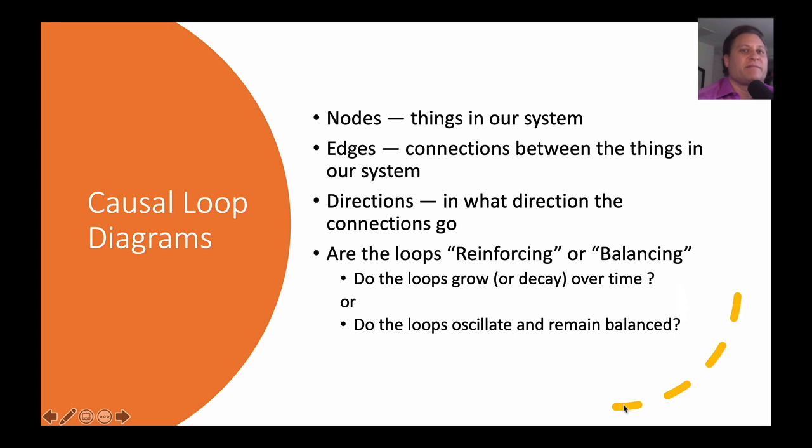So some definitions behind causal loop diagrams. We have nodes, which are basically the things within our system, the elements. So in the case of the molecules, it was the atoms that were our nodes. In the case of the economic system, it might be banks. In the case of government, it might be different government institutions or maybe different government legislatures. In the case of a car, it might be the different parts of a car, the tires, the steering wheel, the engine. So the nodes are the elements within our system. The edges are the way they are connected. Now, these edges typically have a direction to them. In other words, one affects the other.